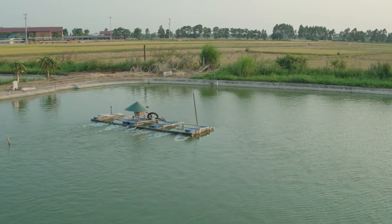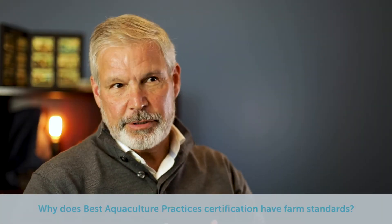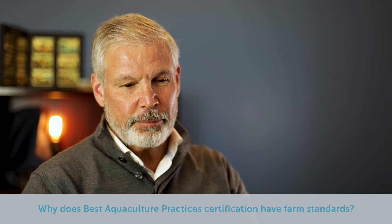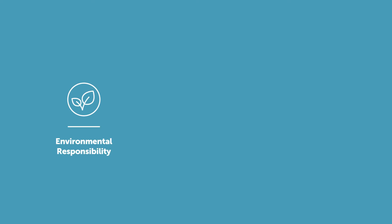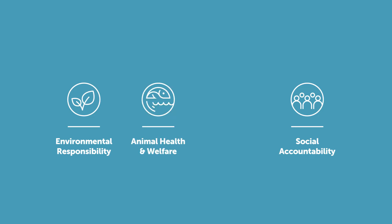When we first started down the path of responsible aquaculture, the first thing we needed to determine is what does responsible look like — what is responsible? The way to define responsible is by standards. The BAP standard is responsible in several different ways. It actually has four pillars: an environmental responsibility pillar, a social responsibility pillar, an animal welfare responsibility pillar, and finally the food safety aspect.